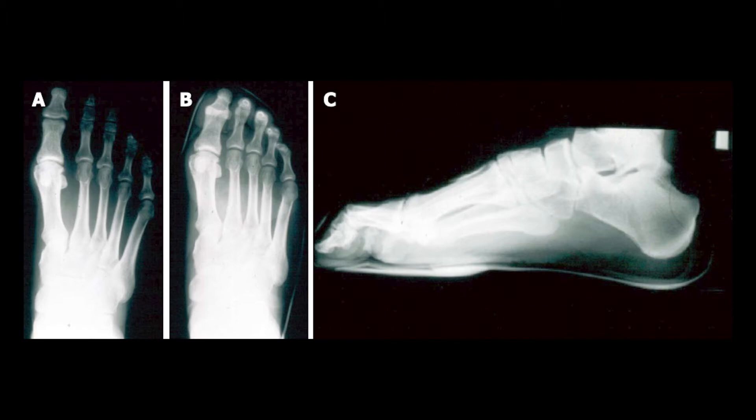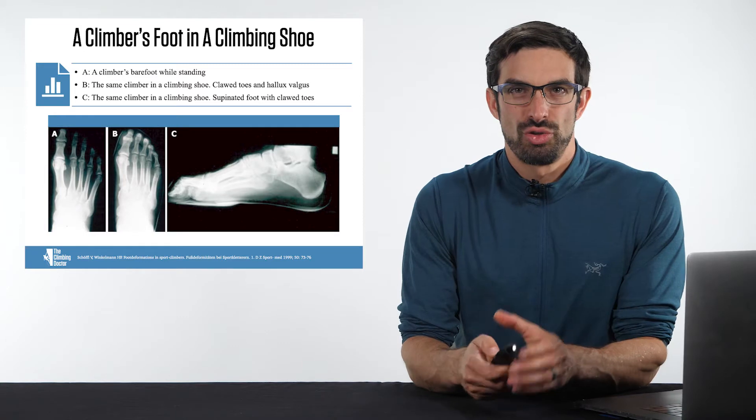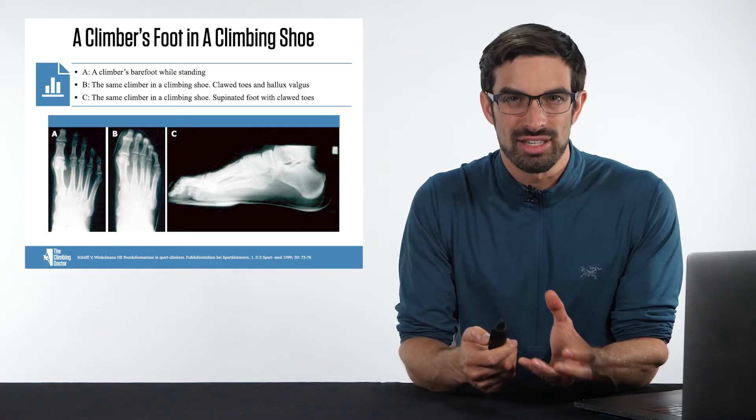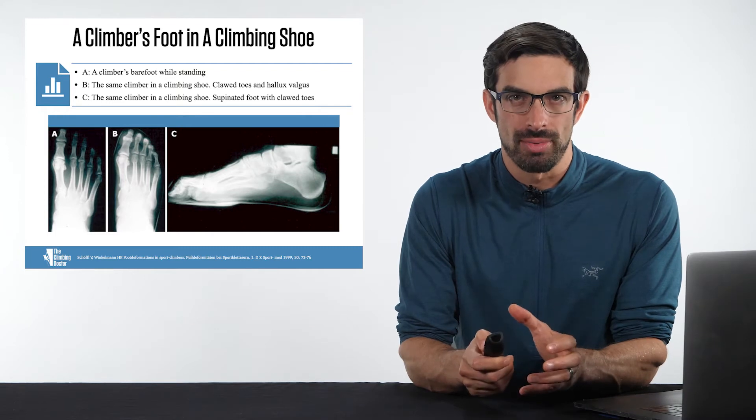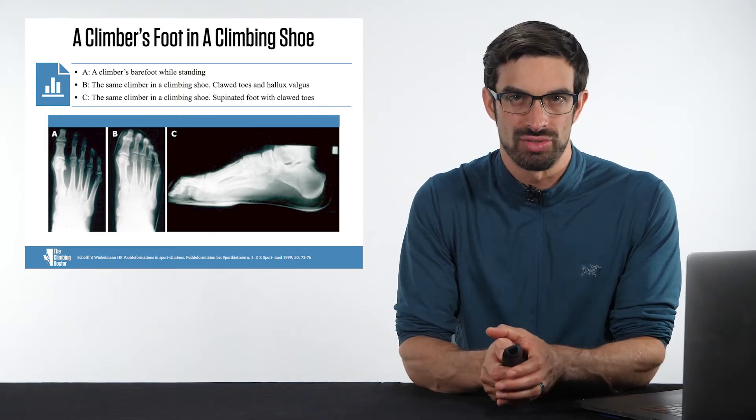You can notice the clawed toes and the hallux valgus. In image C, the lateral view, you can see a supinated foot with clawed toes. These clawed toes, this hallux valgus, this supinated foot is common with rock climbers, especially climbers wearing tight-fitting shoes.